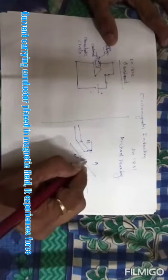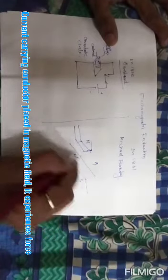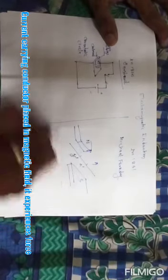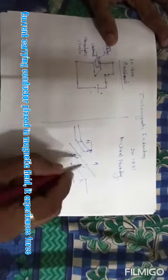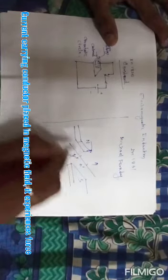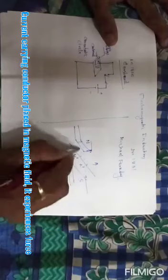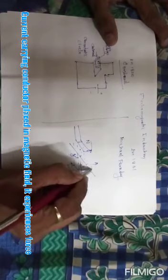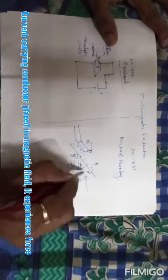According to Oersted's experiment, when current flows through the conductor, flux is set up around that conductor. There are two fluxes: one flux from the permanent magnet from N to S, and another flux from the